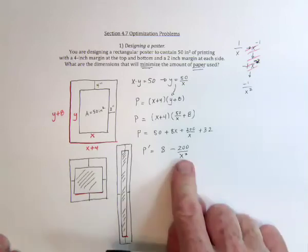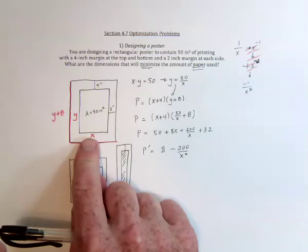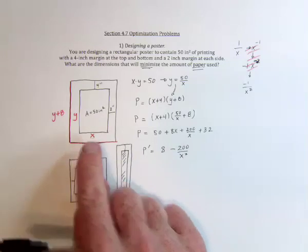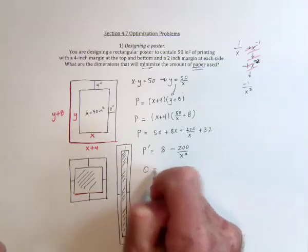So the derivative is undefined at 0, which means something interesting happens at 0. Namely, if this side of the poster were 0, you wouldn't have a poster. So that's not really useful in this case, but you often have to check what if it's undefined? Next, if it's 0.